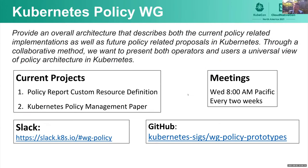The policy workgroup is focused on all things policy, specifically looking at Kubernetes policy itself and how Kubernetes operators can use policy as code. We have two current projects. We meet every other Wednesday at 8 a.m. Pacific, have our own Slack channel, and a GitHub repository with prototypes.